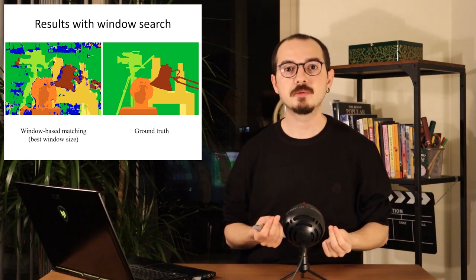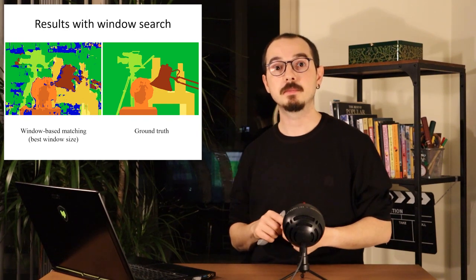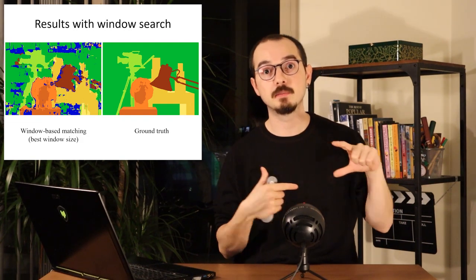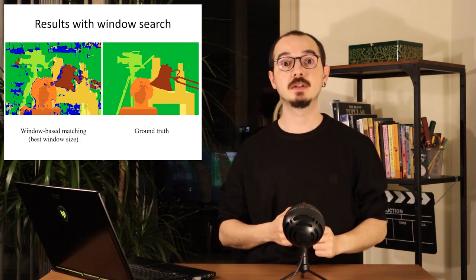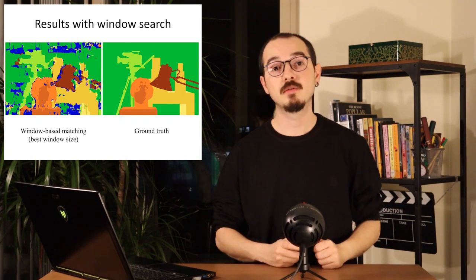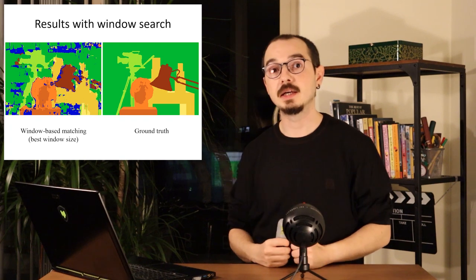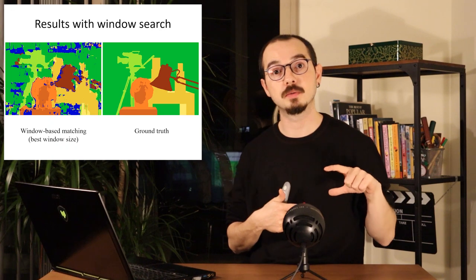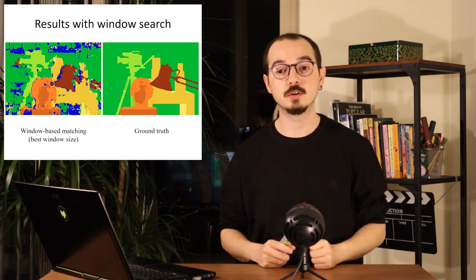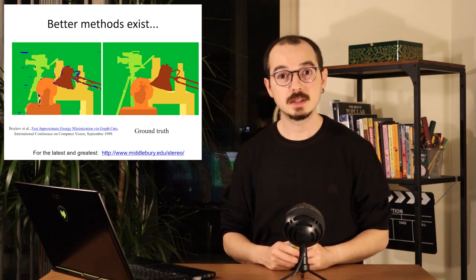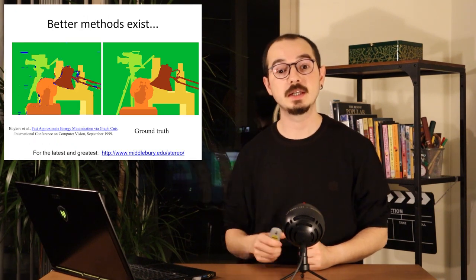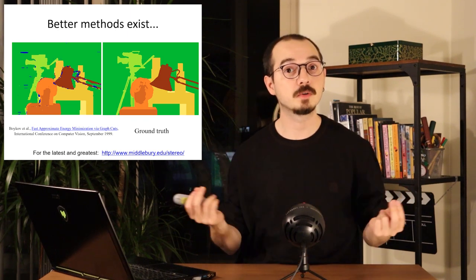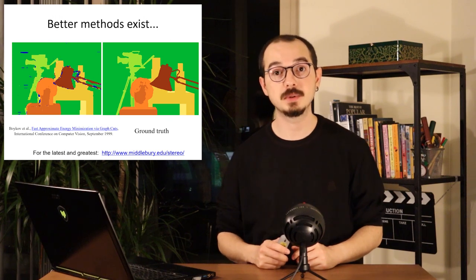We already know what types of features can be matched in an image. If there is a lot of texture with corners, we get a more reliable matching score. But if an image region lacks texture — for example a blank wall — results are unreliable. With window matching alone you get a noisy result as seen here. We will see how to solve this with a more sophisticated energy minimization formulation.